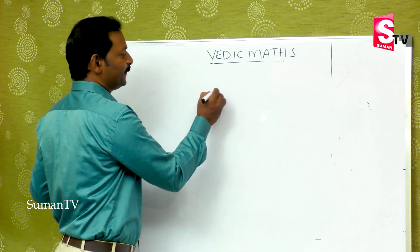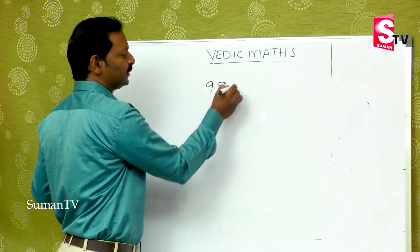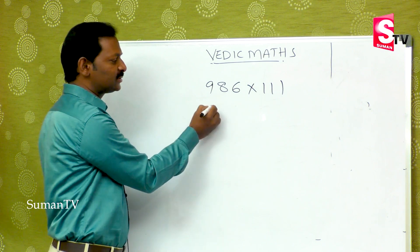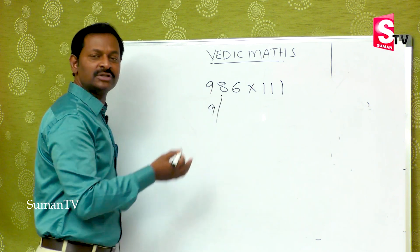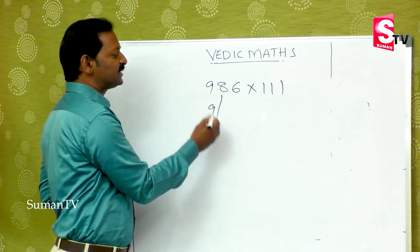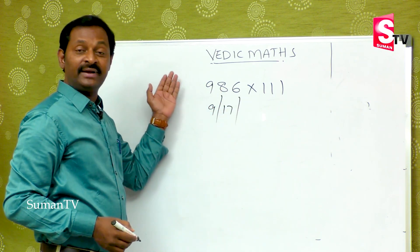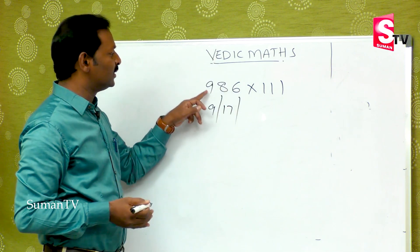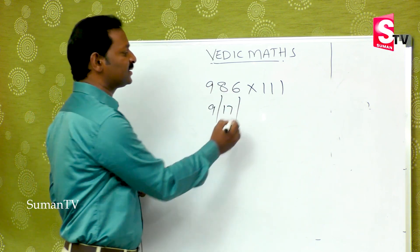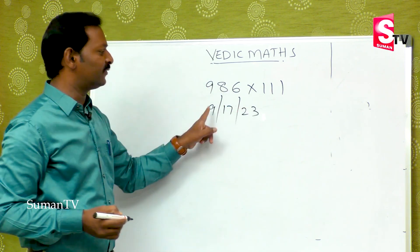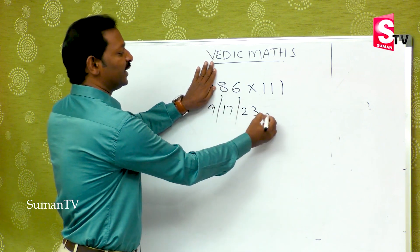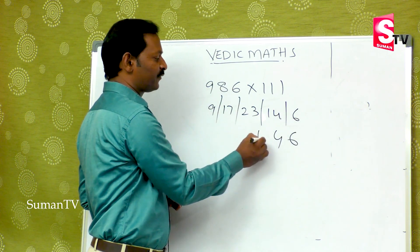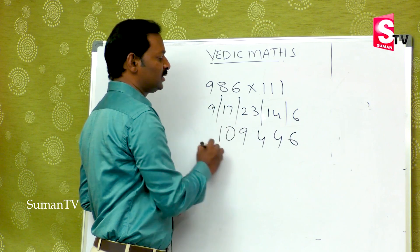Suppose you take 986 multiplied by 111. The first digit is nine. I will put a slash because the balancing rule applies. Nine plus eight is seventeen. Seventeen plus six is twenty-three. Whenever we complete three, close this. Last two is fourteen, and the last digit is six. So the final answer is 109,746.